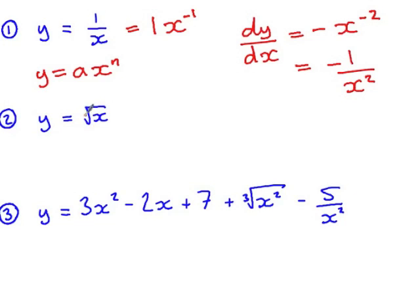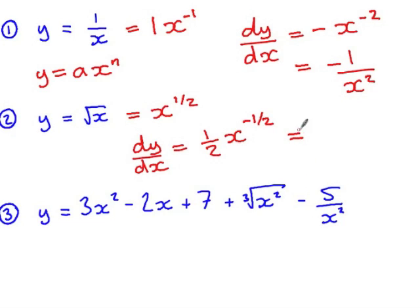In example number 2, we've got y as the square root of x, which is x to the power of a half. So dy by dx, multiply by the power, half x. Reduce the power by 1 to the power of negative 1 half. This doesn't look very nice again, so using our index laws, this is 1 over 2 root x.